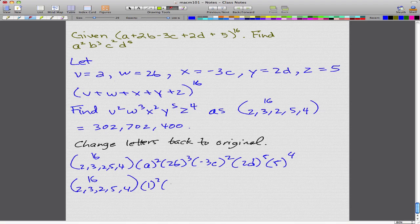We take out the 2 from 2b to the power of 3, so 2³. Take out the negative 3, negative 3 to the power of 2. Take out the 2 from 2d to the power of 5, we get 2 to the power of 5. And 5 to the power of 4 is just 5 to the power of 4. It has no variables. And what we're left with is a²b³c²d⁵. And that's what I mean by grouping all the variables into 1.